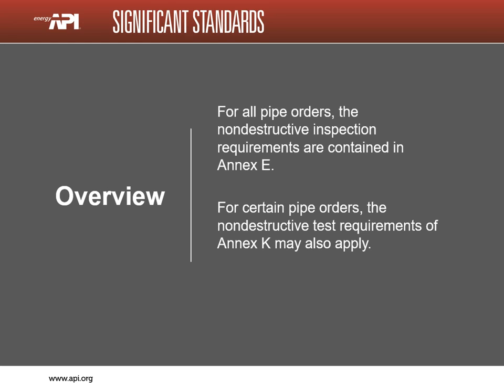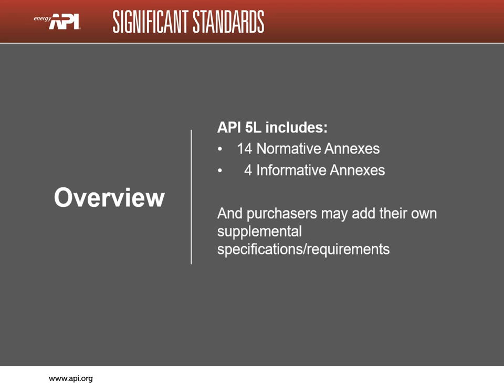The requirements for non-destructive testing are covered in Annex E. For certain orders of pipe, the non-destructive requirement of Annex K may also apply. In addition to the main body of text, there are 19 annexes, Annex A through Annex P. Purchasers may add additional requirements from their company's supplemental specification.